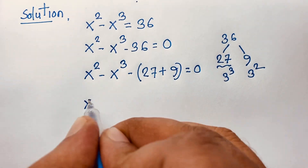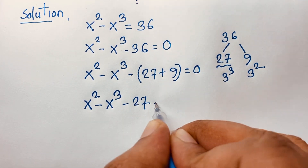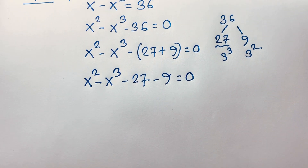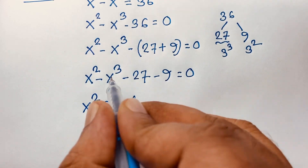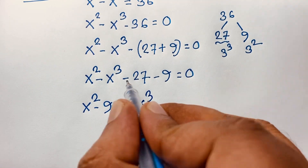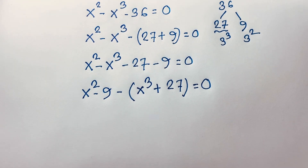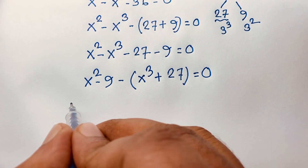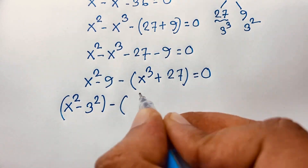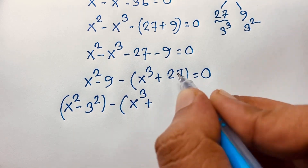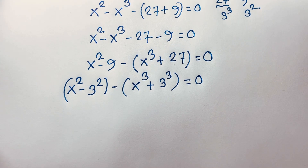Rearranging the terms: x² minus 9 minus x³ plus 27 equals 0. We can rewrite this as x² minus 3² in brackets, and minus x³ plus 3³ in brackets, all equal to 0.